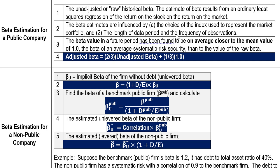Another issue is the length of the data period. Are we using monthly returns for 20 years, or weekly returns for five years? It really depends, because if you use different lengths of periods and different holding period returns — say weekly versus monthly, or daily versus weekly — you will get different betas. So what is the most appropriate time period to estimate a more robust beta? That remains an open question with a lot of research and debate.